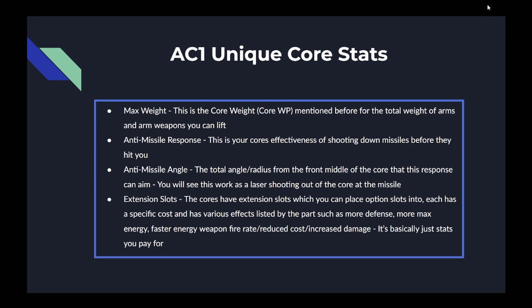The last stat for the core is the extension slots. Cores have extension slots which you can place optional parts into. Each has a specific cost and various effects listed by the part, such as more shell defense, energy defense, more maximum energy, faster energy weapon fire rate, reduced cost for firing energy weapons, or even increased energy weapon damage. It's basically extra stats you pay for that may not be affected in any other spot.